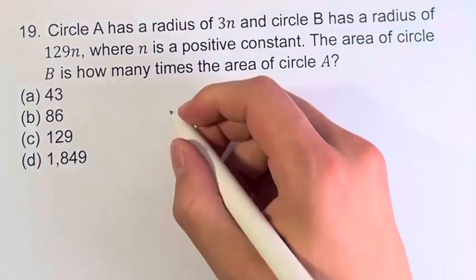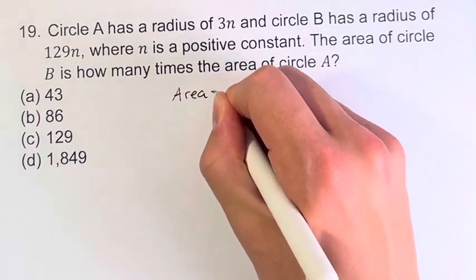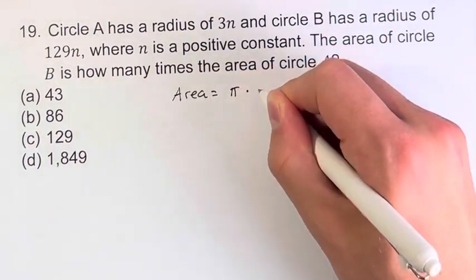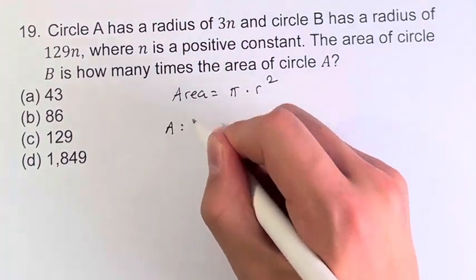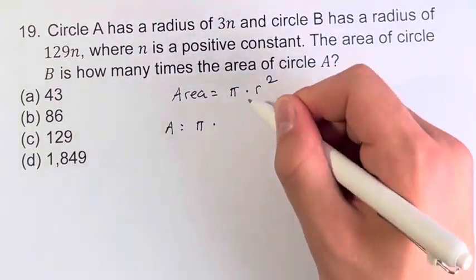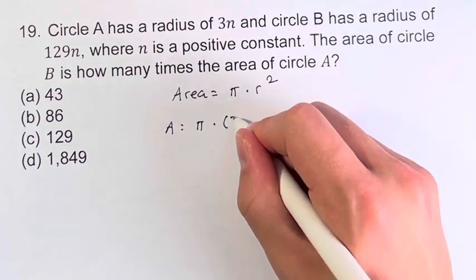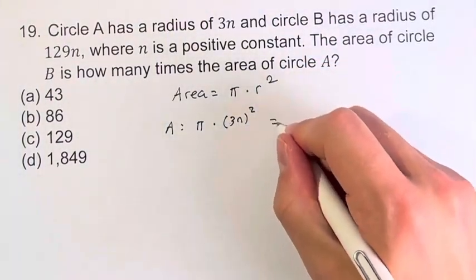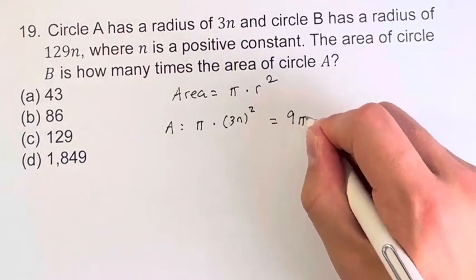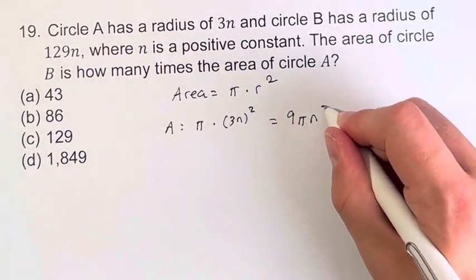So first let's find the areas. The area of a circle is equal to π times the radius squared. For circle A, that's equal to π times (3n)² which is 9πn².